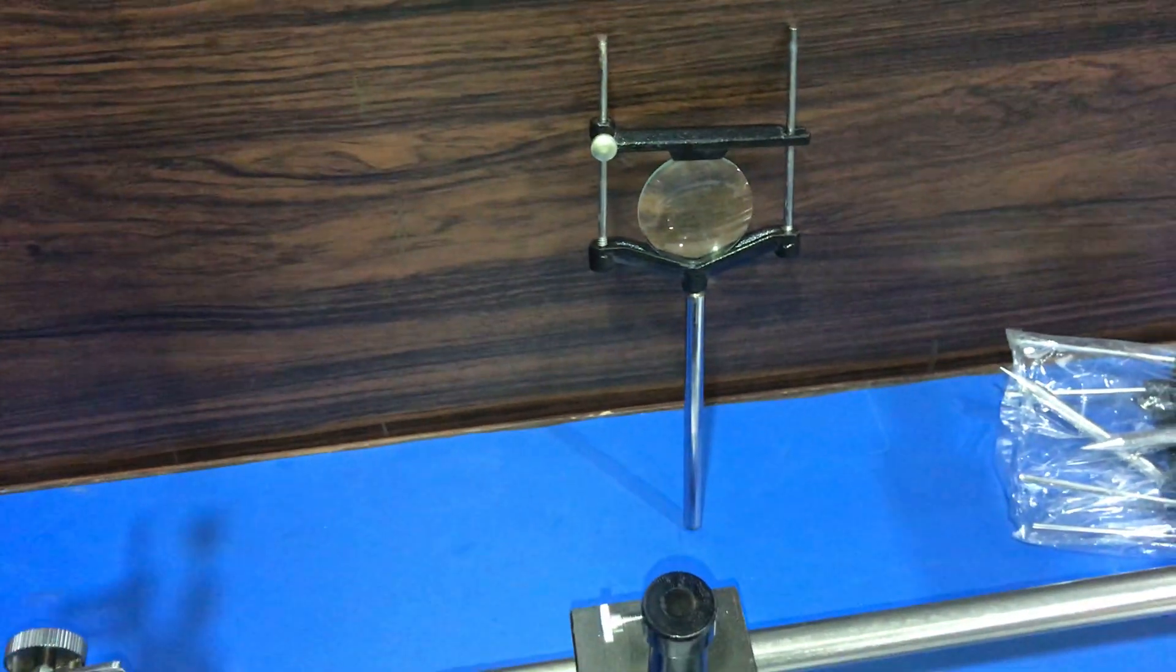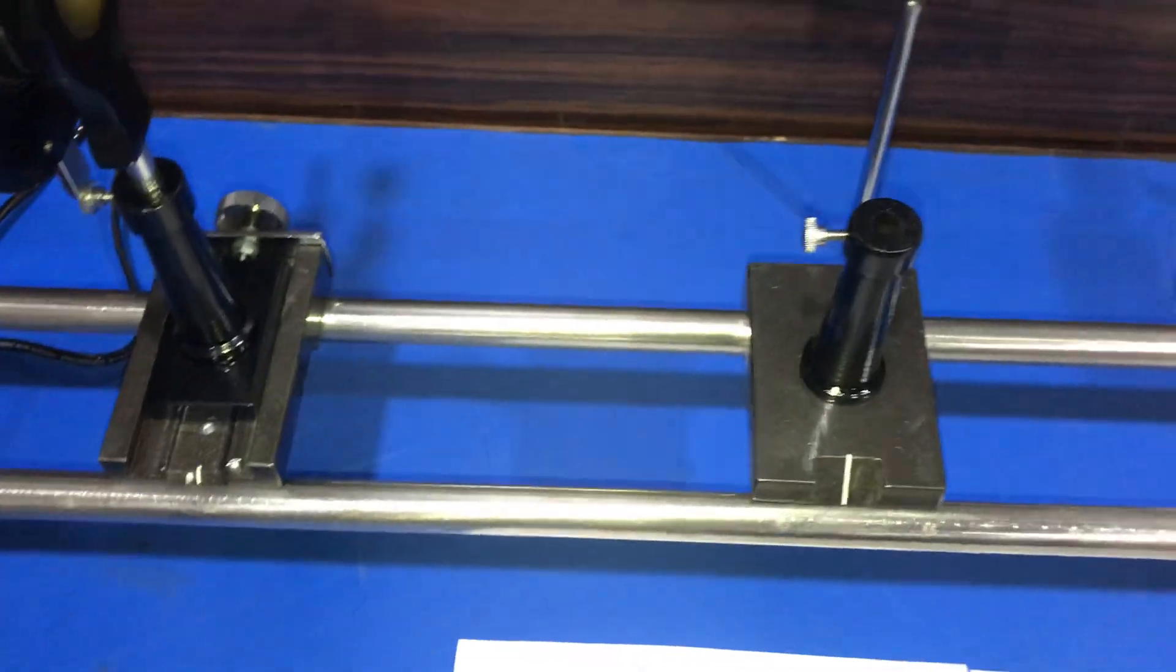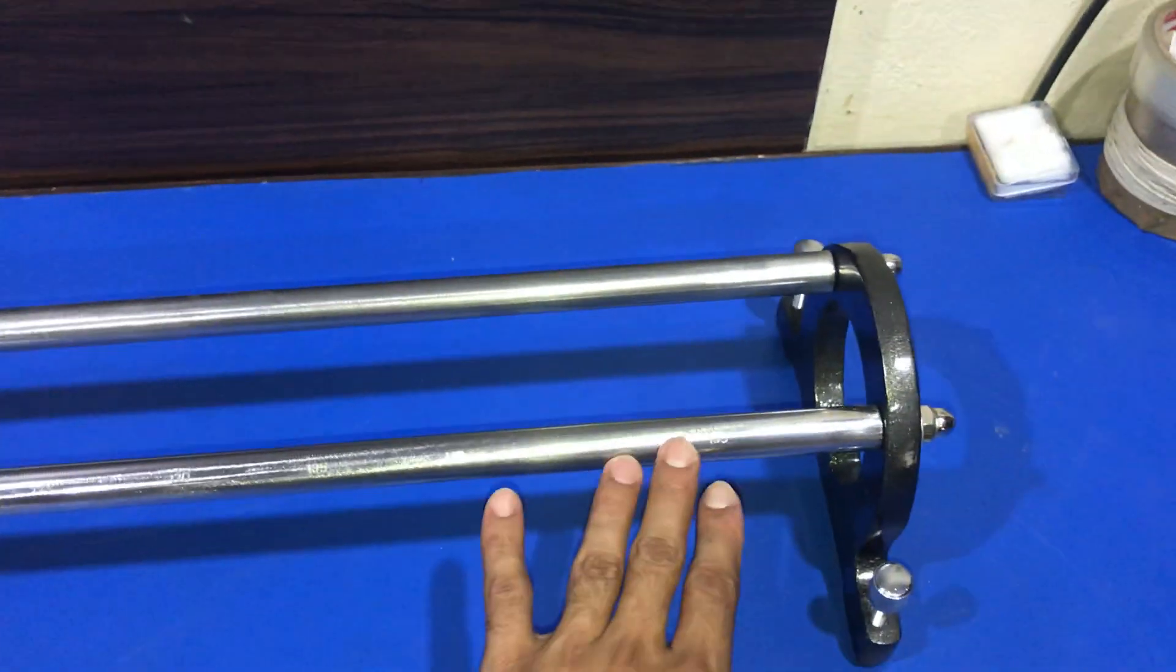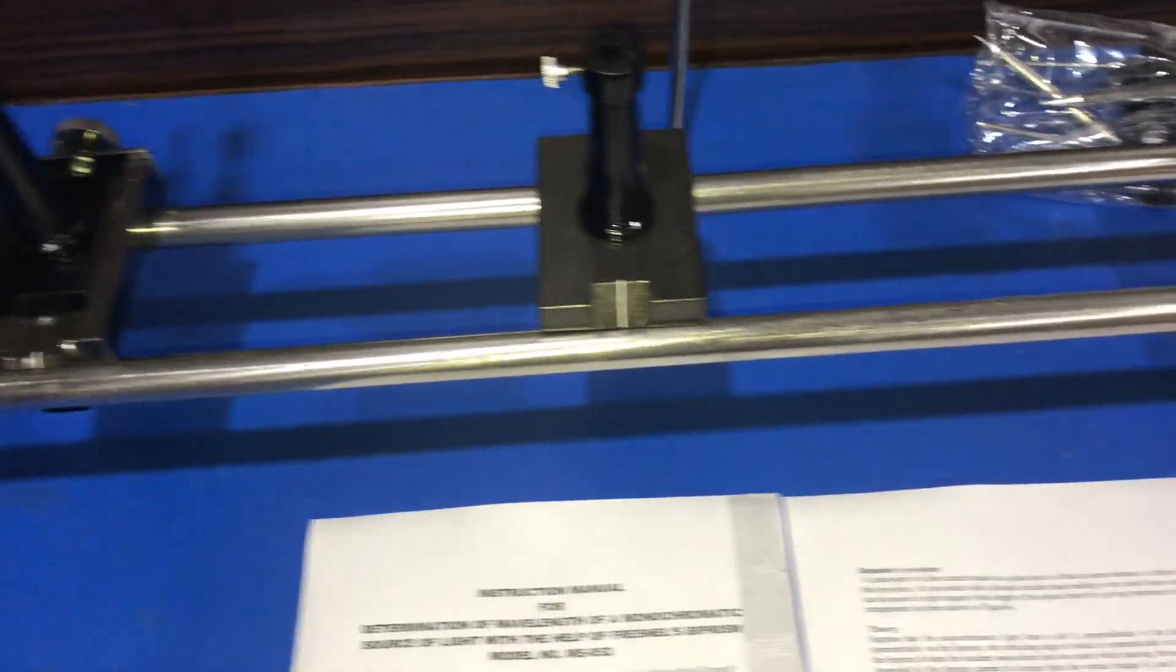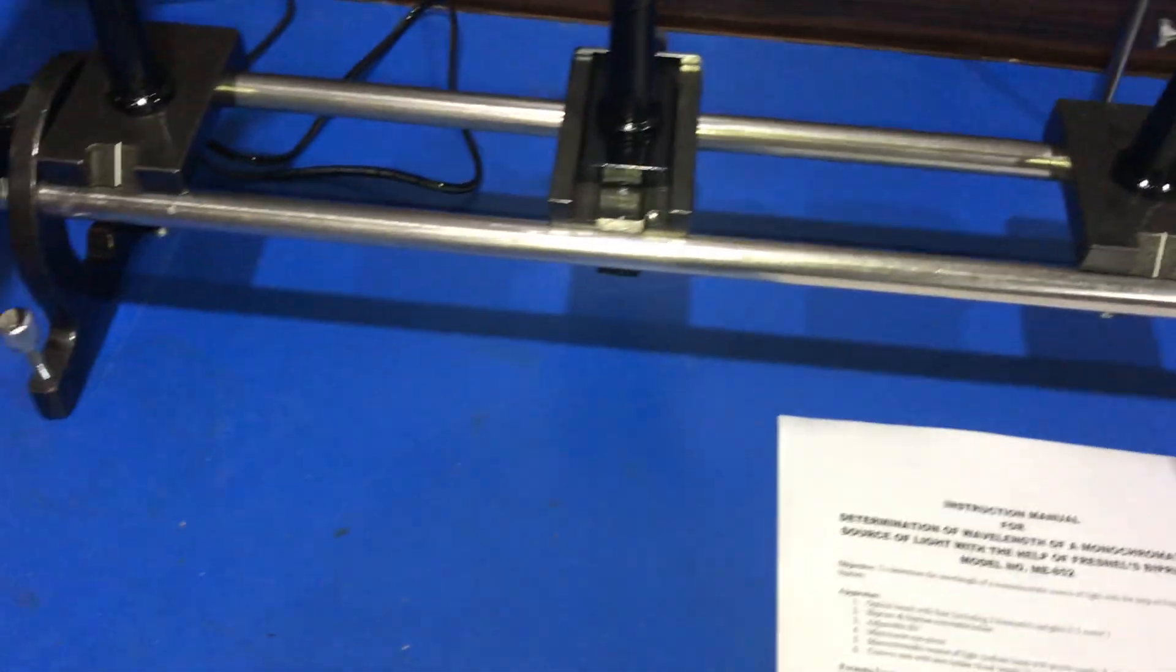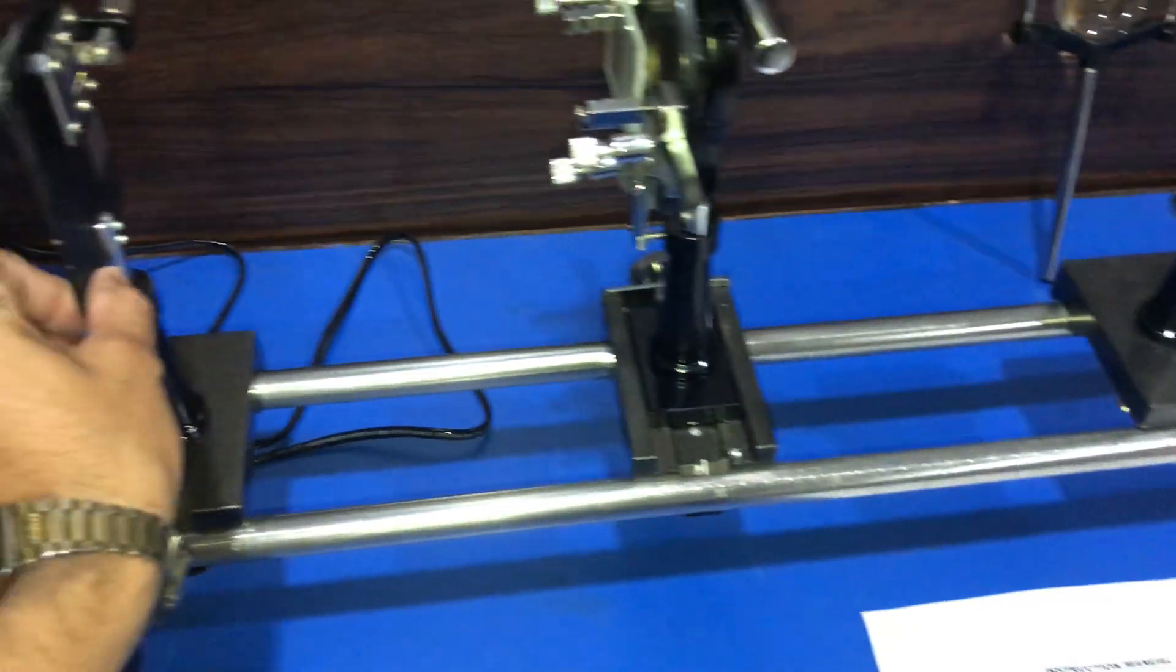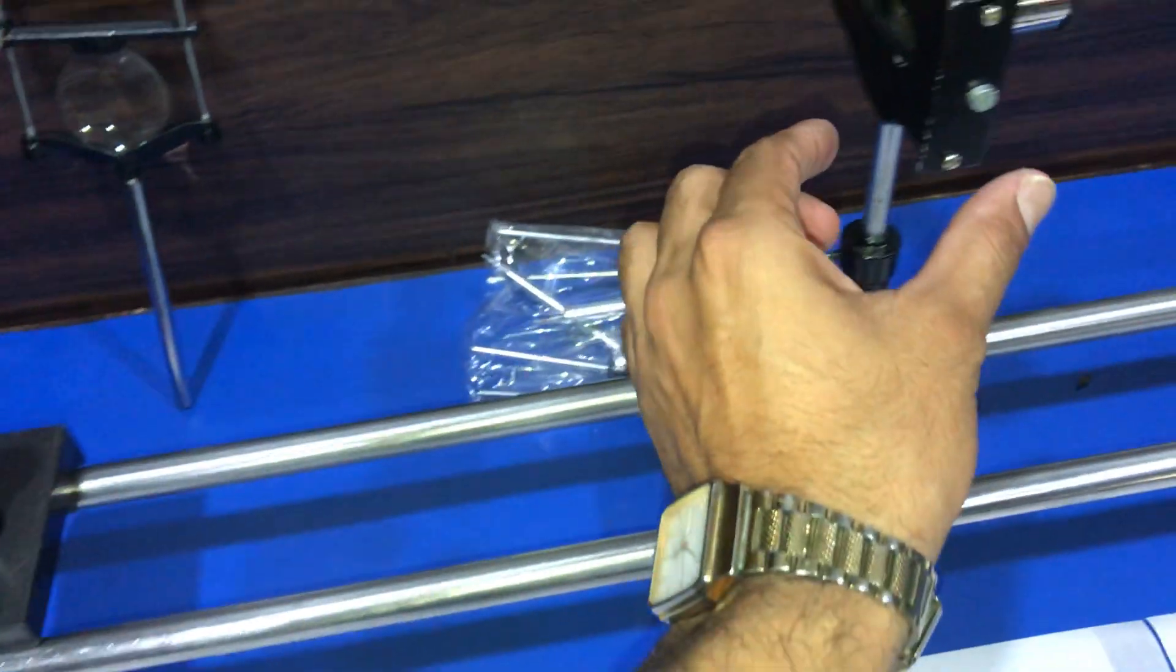This is a convex lens of focal length 10 cm, and this is an eyepiece. This is the optical bench of length 1.5 meters.